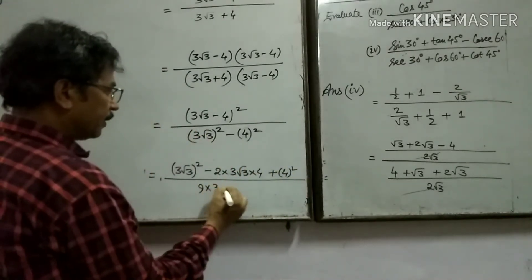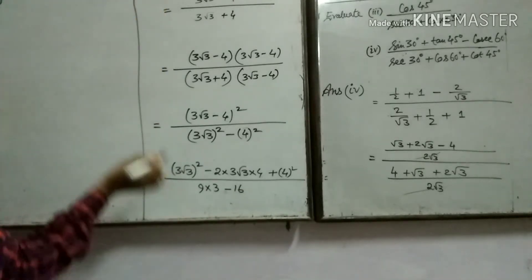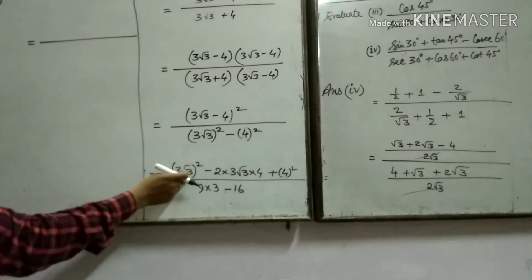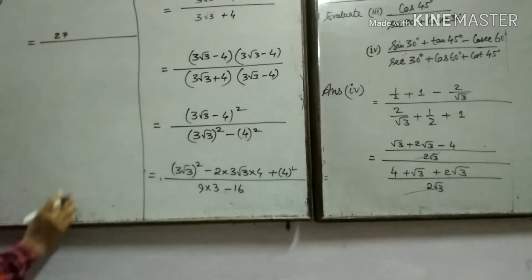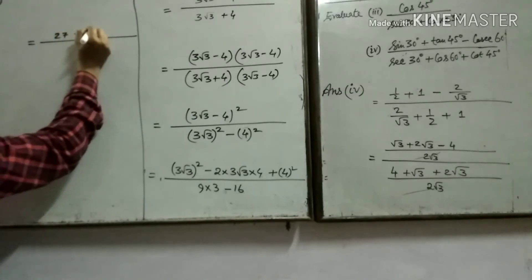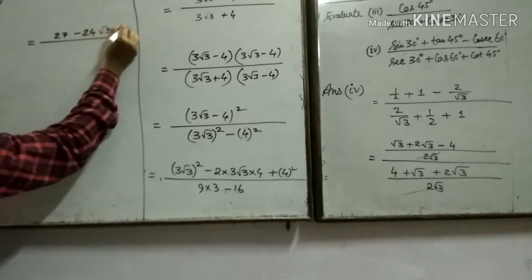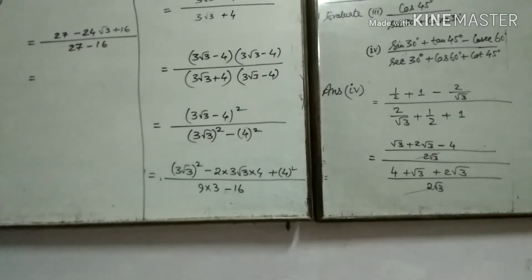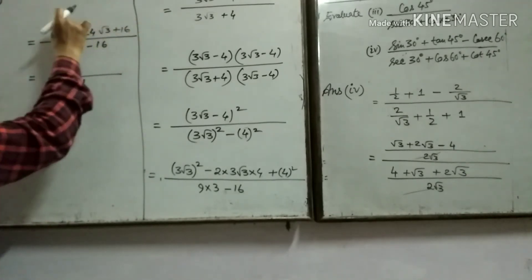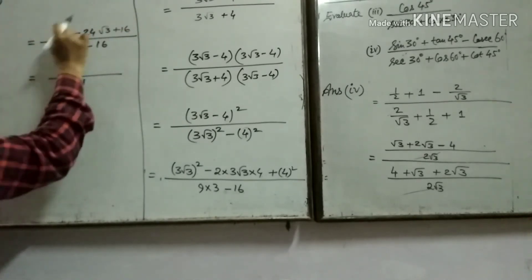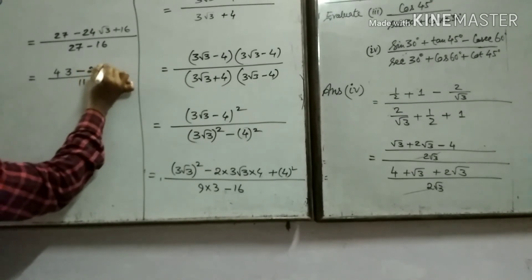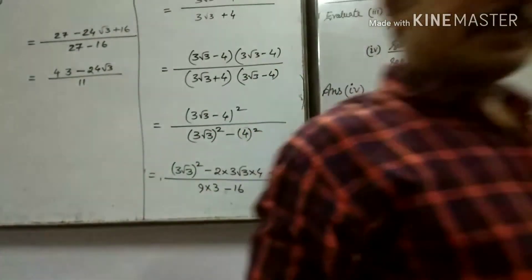This will be 9 into 3 minus 50. After that, here will be 9 into 3, that will be 27. That will be 64 plus 12 and 24. Here will be 3 plus 15, this will be 27 minus 16. 27 minus 15, this will be 11. And 27 plus 16, this will be 6 plus 11, this will be 43 minus 24.